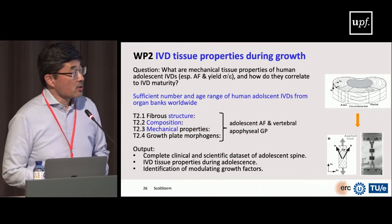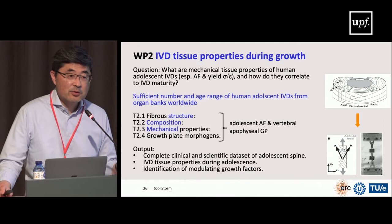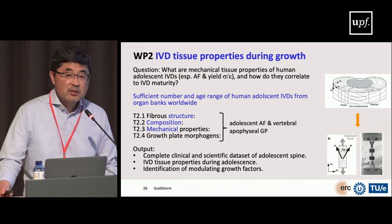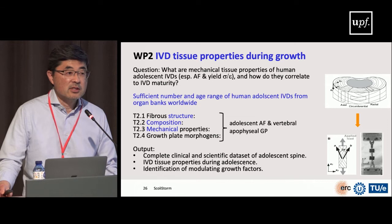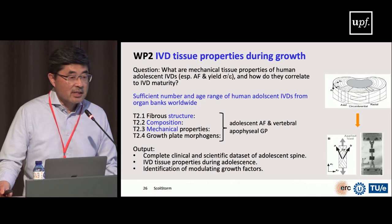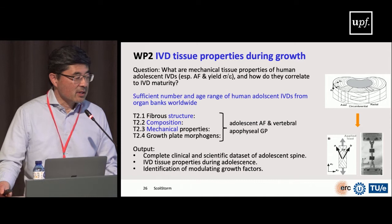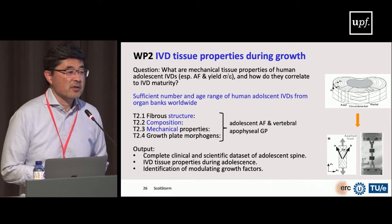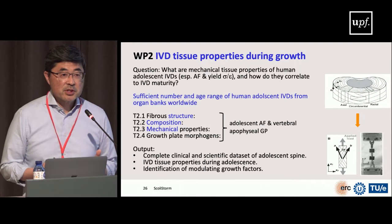For tissue properties, we can't test our clinical study patients, so we need to go to tissue banks worldwide to collect specimens from adolescent discs — very difficult to find, but through our network of spine surgeon collaborators we expect to collect enough. We'll measure annulus fibrosus structure, mechanical properties, and composition across all ages from 10 to about 17.